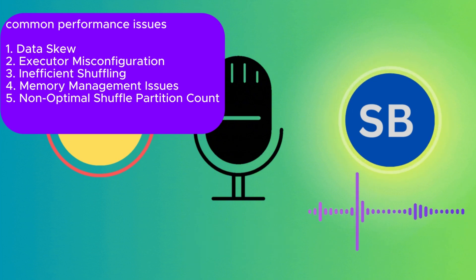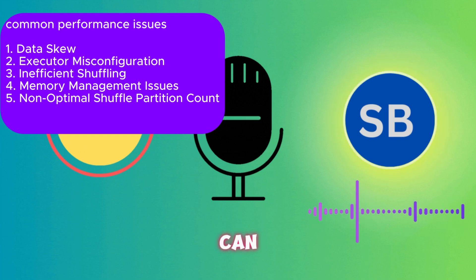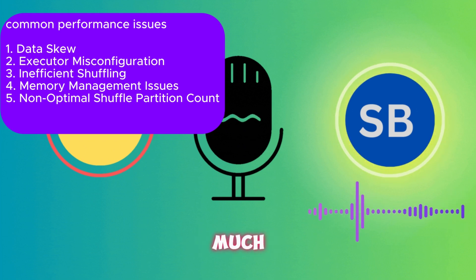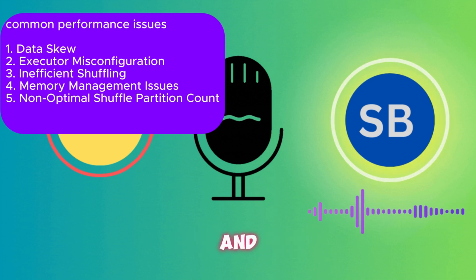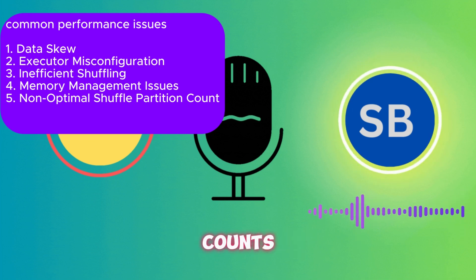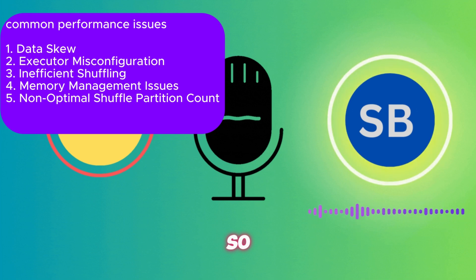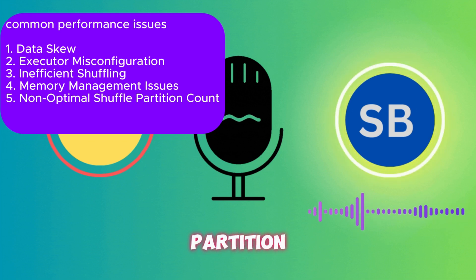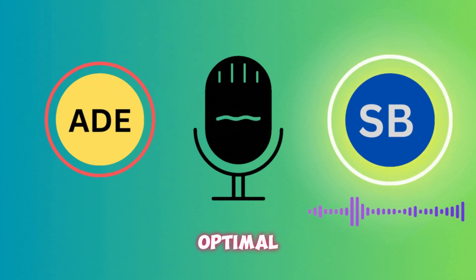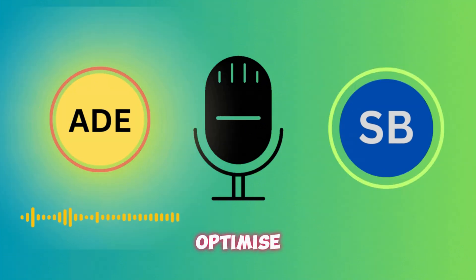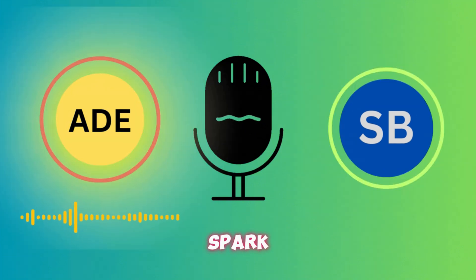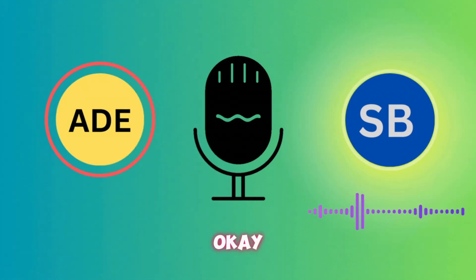Tasks also become stragglers due to data skew — one task can run forever while others finish much faster. Memory management and non-optimal shuffle partition counts are also bottlenecks; we need to provide optimal shuffle partition values. How can you optimize shuffle operations in Spark?